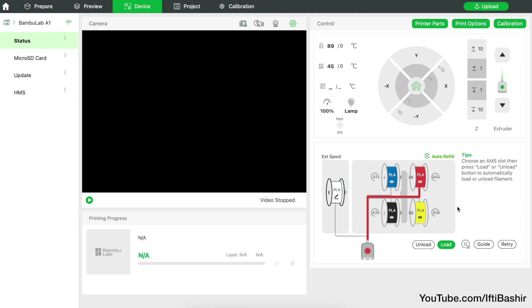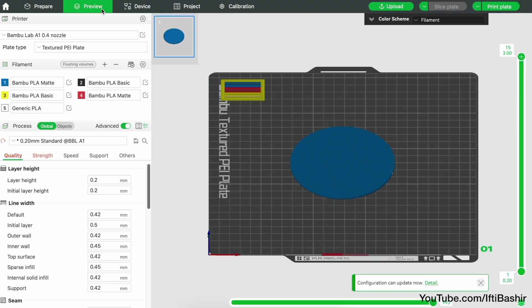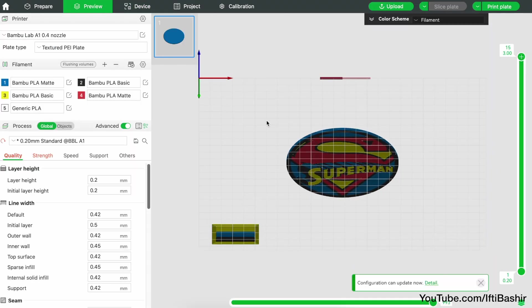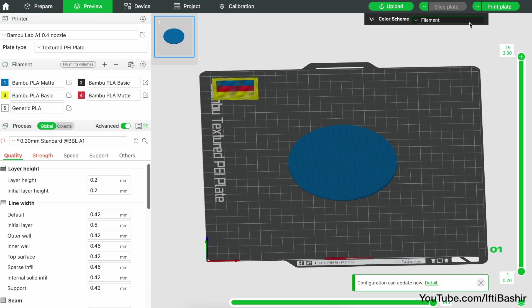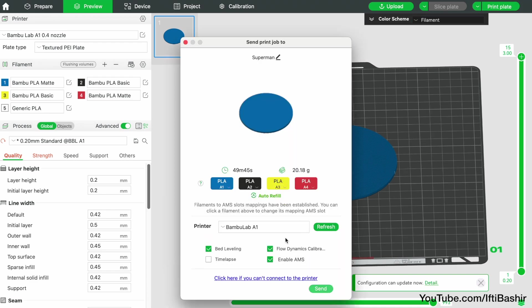Also handy is how the software picks up the printer and synchronises loaded filament type and colour as well. There's really nothing further to do here. We can go ahead and send the print job across to the printer. Just as easy as we would a standard 2D paper printer.